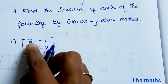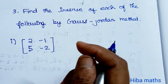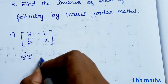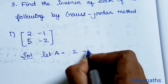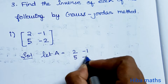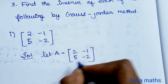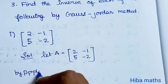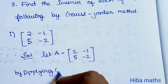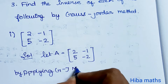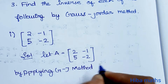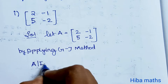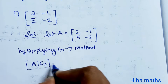First question: the matrix is [2, -1; 5, -2], a 2×2 matrix which is very easy. Solution: let A be equal to [2, -1; 5, -2]. By applying the Gauss-Jordan method, we write the augmented matrix [A | I2].